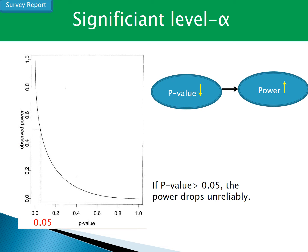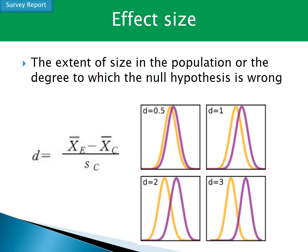The second factor, significant level, is the error probability of the sample statistic obtained from the sample when the hypothesis test is performed. Statistical power increases as the p-value becomes smaller. If the p-value is greater than 0.05, the power drops unreliably. The last factor, effect size, means the extent of difference in the population, or the degree to which the null hypothesis is wrong. It can be obtained by dividing the difference between the experimental group and the control group by the variance of the experimental group.